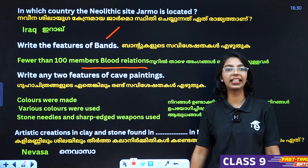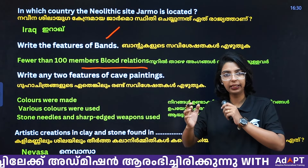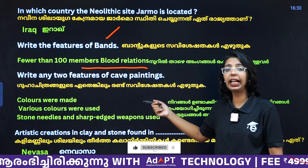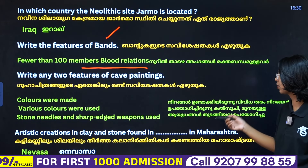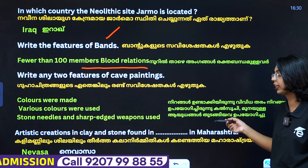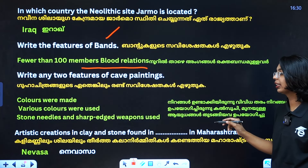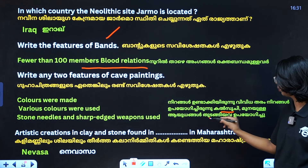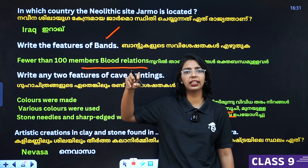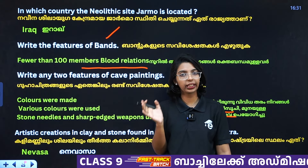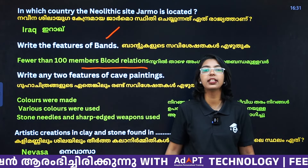Write two features of cave paintings. Cave paintings — we are talking about colourful pictures. First, various colors were used. And then, stone needles and sharp weapons were used. They used colourful light on the ceiling, and stone needles and sharp weapons. These are the main features of cave paintings.